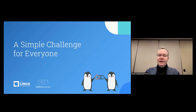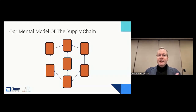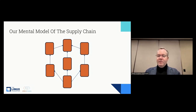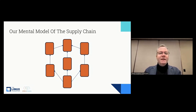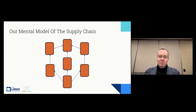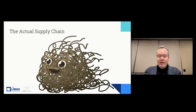The simple challenge that everyone faces from our optic is supply chain management. We have a mental model of the supply chain as various entities sharing stuff — there's someone at the very beginning, someone at the very end, and stuff is flowing. This model is accurate in some ways, but it leaves out the human factor and the management factor. While our model can look pretty elegant, the actual supply chain has humans in it and looks kind of like a spaghetti monster — it's a little bit chaotic.